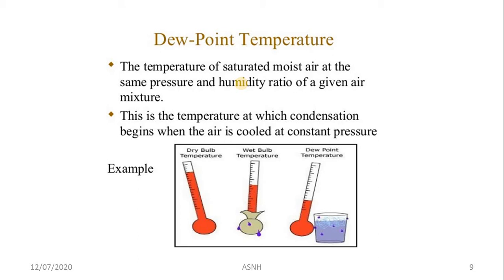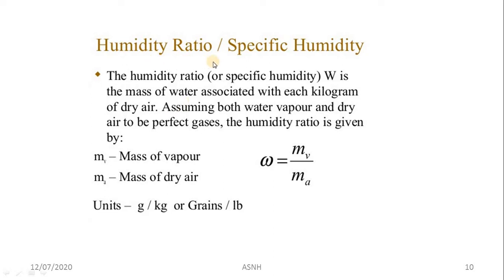Dew point temperature is the temperature of saturated moist air at the same pressure and humidity ratio of a given mixture. It is the temperature at which condensation begins when the air is cooled at constant pressure. The key difference is that the wet bulb thermometer's bulb is covered by wet cloth, while dew point is where condensation begins.